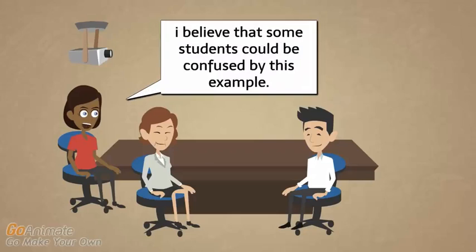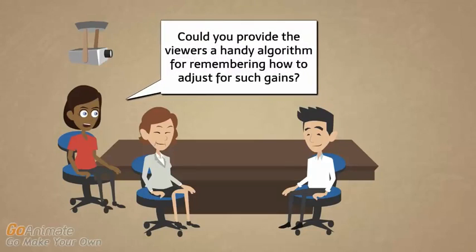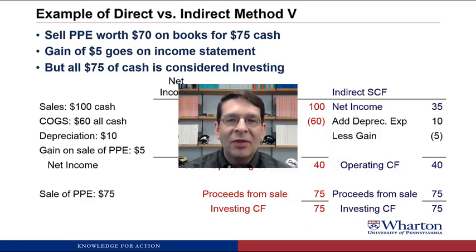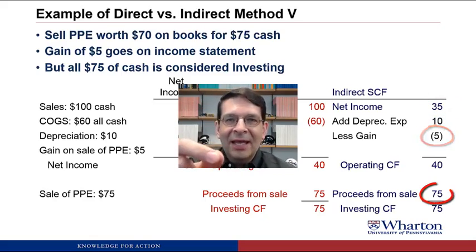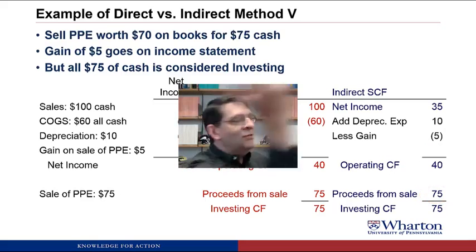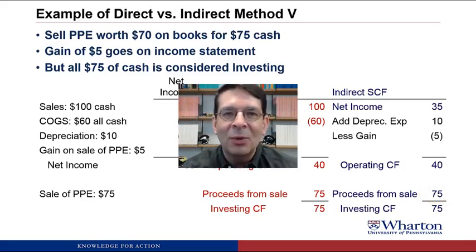Some students could be confused by this example. Could you provide a handy algorithm for remembering how to adjust for such gains? I do have a little memory device that I use when I teach this on campus — the Hokey Pokey. I don't know if you remember this little song and dance, but it goes something like this: You put the gain in, you take the gain out, you put the gain in and you shake it all about. You do the Hokey Pokey and you turn yourself around — that's what it's all about.